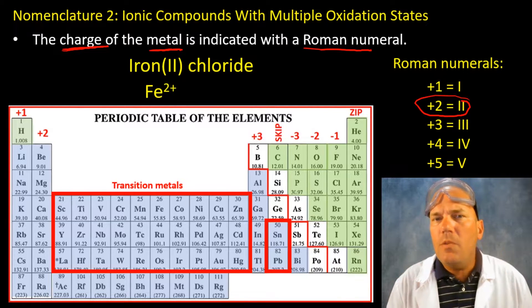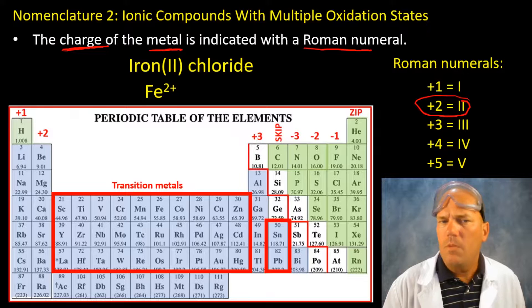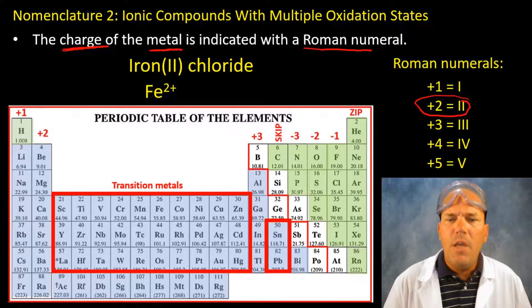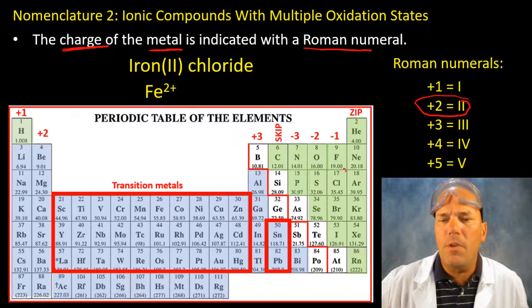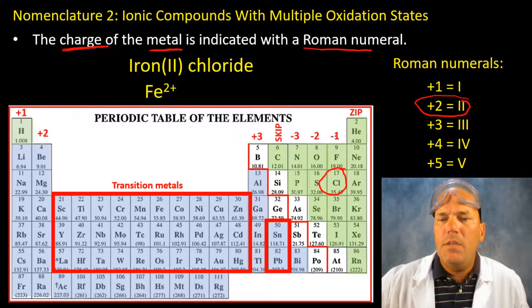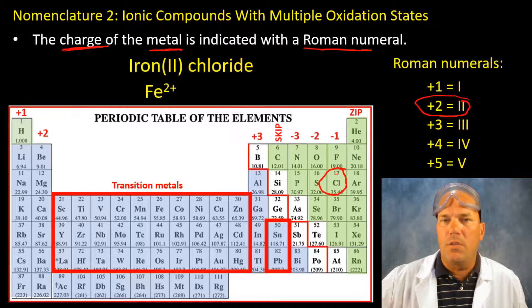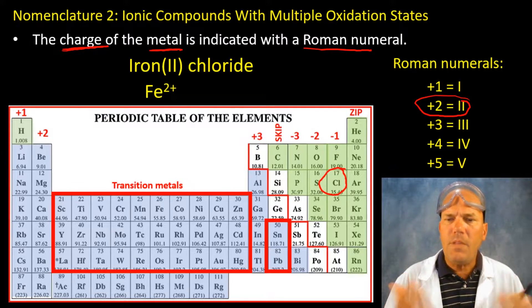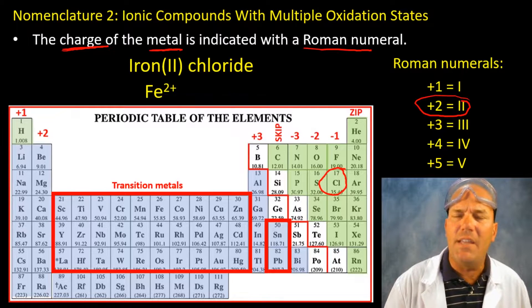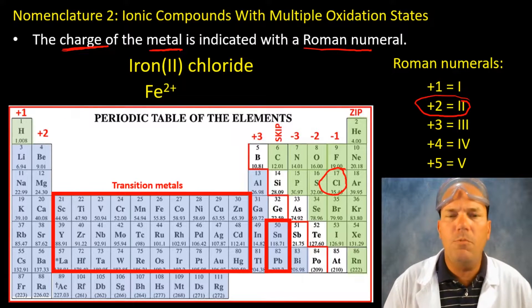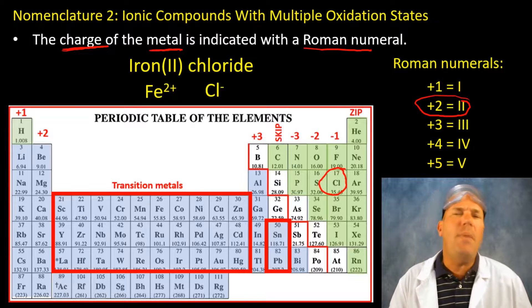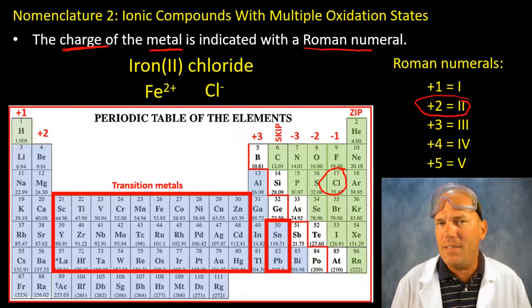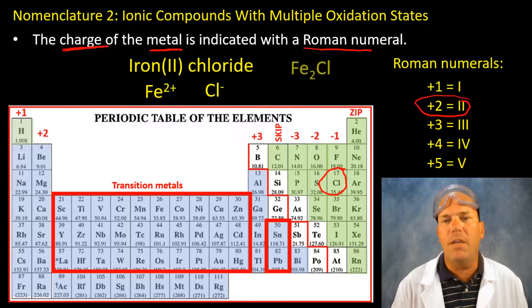Now start with what you know. Well in this case we know quite a bit. We know the charge of iron is plus two but we also know the chlorine, this halogen, is a minus one charge. That's a fixed oxidation state discussed in nomenclature one. So chlorine is a minus one. Remember we don't include the one, we simply put the minus and that implies minus one.